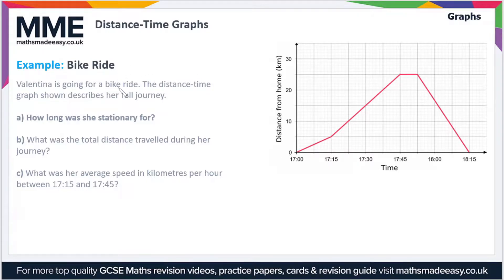We'll start off then. Valentina is going for a bike ride. The distance-time graph shown describes her full journey. For part A, we have to say how long she was stationary for. If she's stationary, that means she's not moving, so that means the distance isn't changing. In other words, it's the flat part of the graph, which is this bit here.